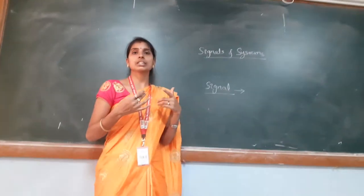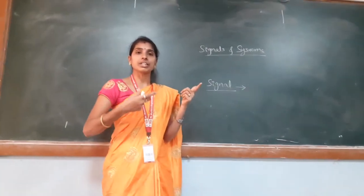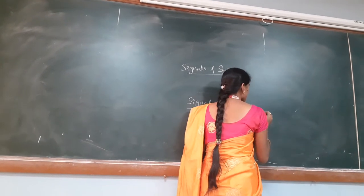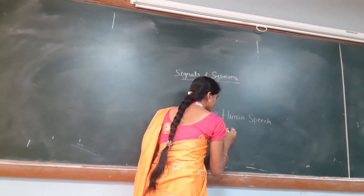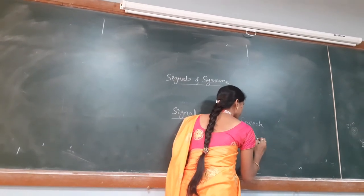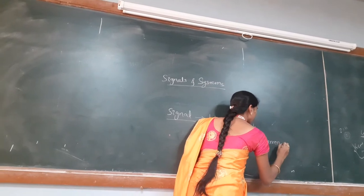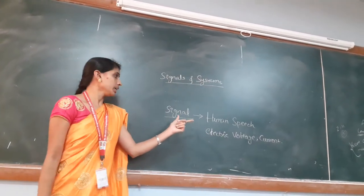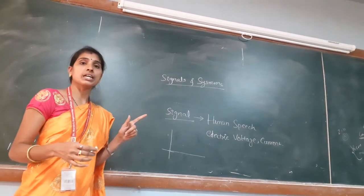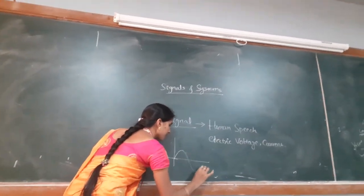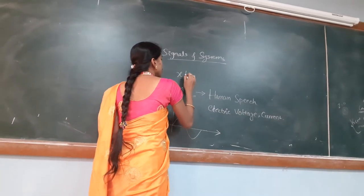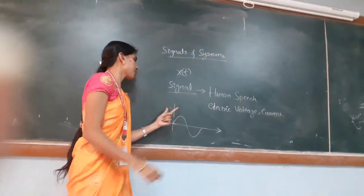Whatever we are talking, that signal will be converted and it will convey the information. Human voice or human speech and electric voltage or current are the best examples of a signal. We have to represent a signal in mathematical form. The signal will be represented by x of t.